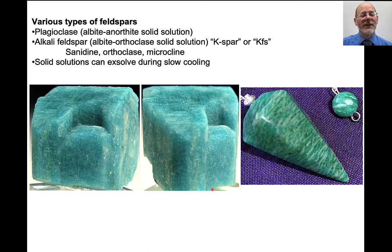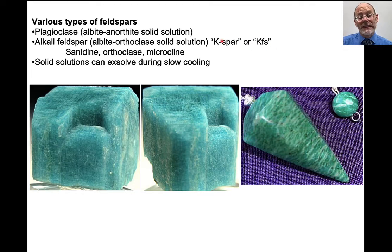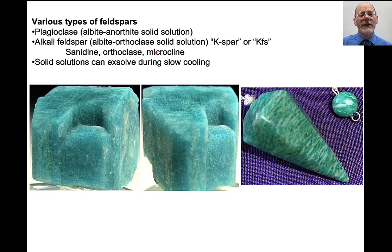There are two main types of feldspars: plagioclase feldspars, which are a solid solution between albite and anorthite, and alkali feldspars, which are a solid solution between albite and orthoclase — commonly called K-spar or K-feldspar. There are three different potassium feldspars: high-temperature sanidine, intermediate-temperature orthoclase, and low-temperature microcline. These differ in terms of their structure and the ordering of silicon and aluminum into those tetrahedra.